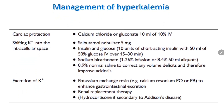Cardiac protection starts with calcium — either calcium chloride or calcium gluconate. Calcium restores normal cardiac conduction velocity but does not restore the resting membrane potential. If you give calcium chloride, you give 10 ml; if you give calcium gluconate, you give 30 ml, because calcium chloride contains three times more elemental calcium than gluconate.